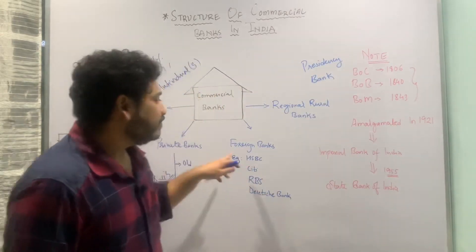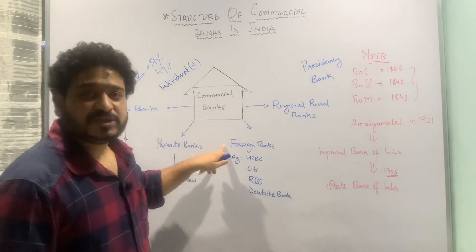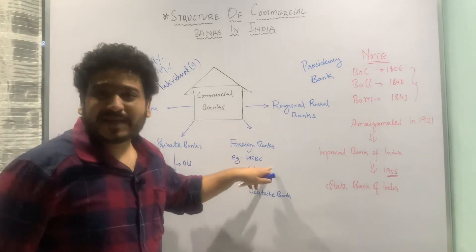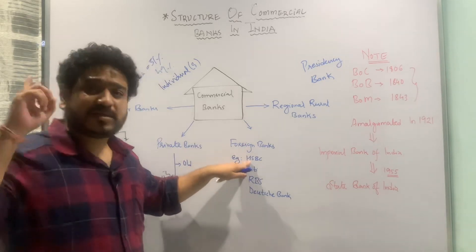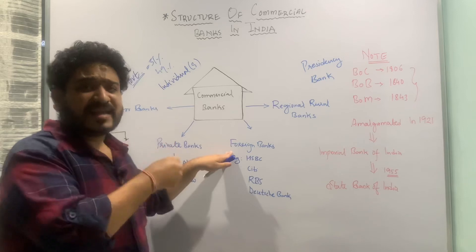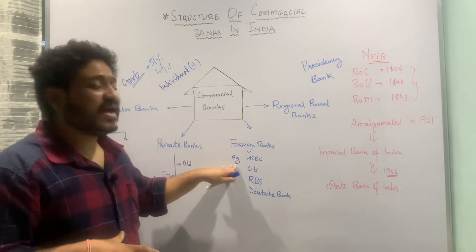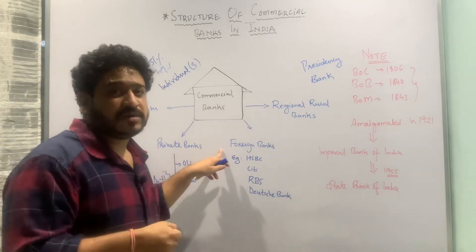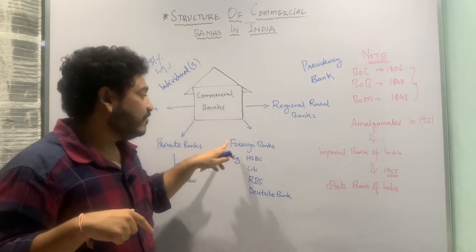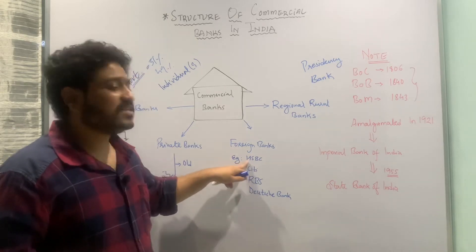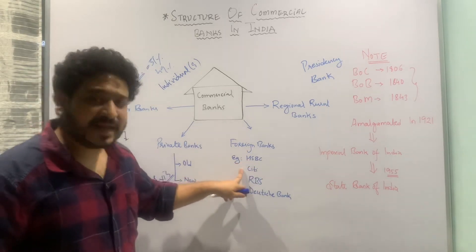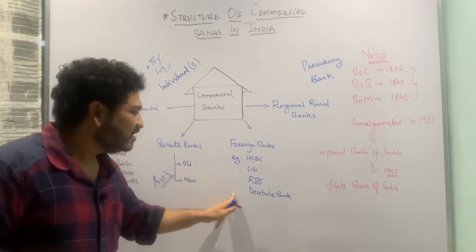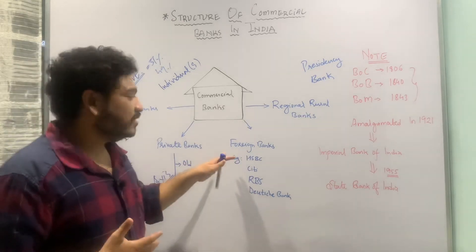Foreign banks are those banks whose headquarters are established in another country. For example, HSBC — the Hong Kong and Shanghai Banking Corporation — has its headquarters outside India but operates in India by taking a license from the Reserve Bank of India. Other examples include Citibank, the Royal Bank of Scotland from the UK, and Deutsche Bank, a German bank. Any bank with its headquarters outside India is treated as a foreign bank.